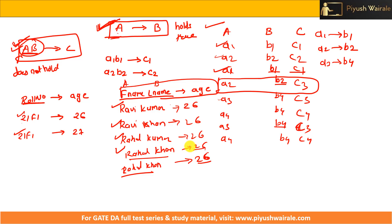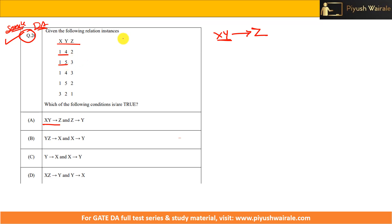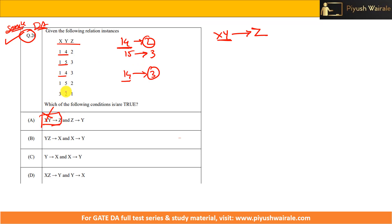Now, GATE sample paper Question 26 (GATE DA): a relation with columns X, Y, Z is given and we must find which FD holds. Option A: XY→Z. Check: combination (1,4) gives 2 — fine. (1,5) gives 3 — fine. But (1,4) also gives 3, meaning the same XY value produces different Z values. So XY→Z does not hold — option A is incorrect.